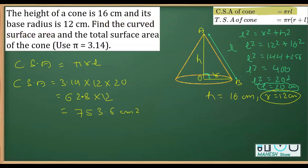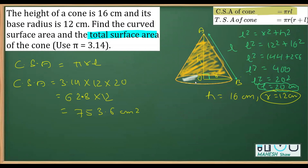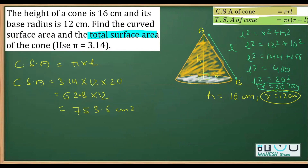Now we also have to find the total surface area. The curved surface area is just the outer curved part. When we include the base area it becomes the total surface area. We can either calculate the base area and add it, or directly apply the total surface area formula. I'll go with directly applying the formula.